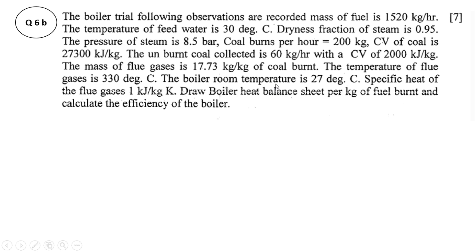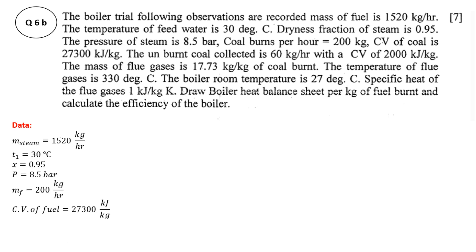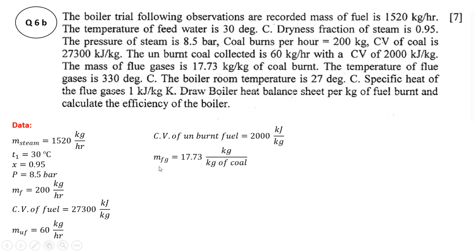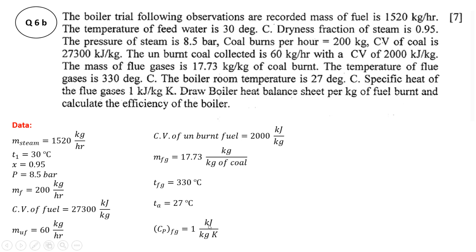Temperature of flue gases is 330°C, boiler room temperature is 27°C, and specific heat of flue gases is 1 kJ/kg·K. In this problem we have to draw the heat balance sheet per kg of fuel burned, so all values must be on a per kg of fuel basis. For example, mass of flue gases is already given as 17.73 kg per kg of coal burned. We have listed all the data: mass of steam, temperature of feed water, dryness fraction, pressure of steam, mass of fuel, calorific value, mass of unburned fuel, its calorific value, mass of flue gases, their temperature, boiler room temperature, and cp of flue gases as 1 kJ/kg·K.